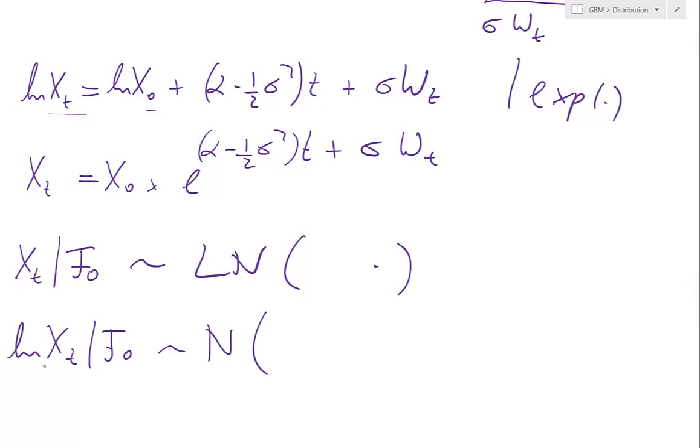If I want to talk in terms of log returns, I would put that part to the left, which is that, and then I know that the log return is just normal with mean alpha minus half sigma squared times t and variance sigma squared times t.